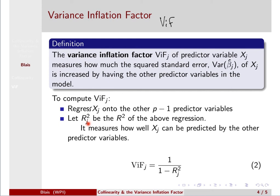So, we have this rj-squared, and then we use it to define the variance inflation factor for that Xj. And we write it as one over the quantity one minus rj-squared.